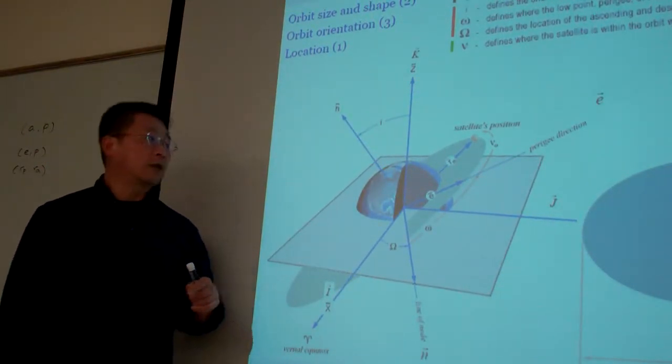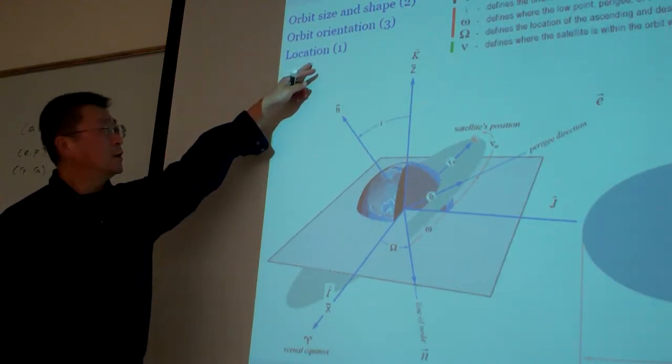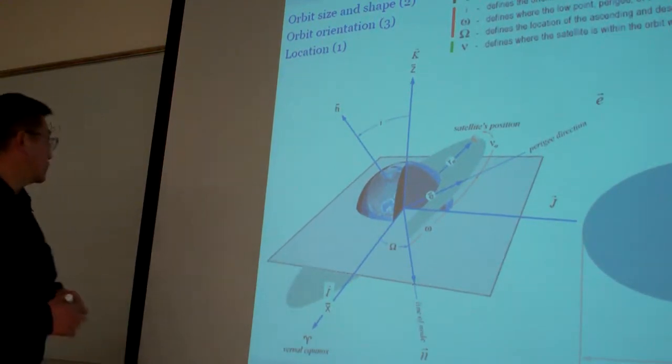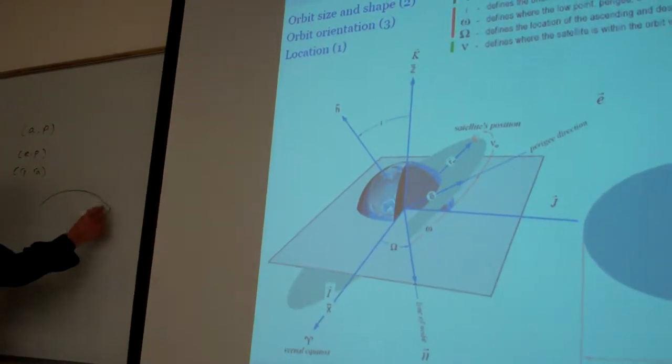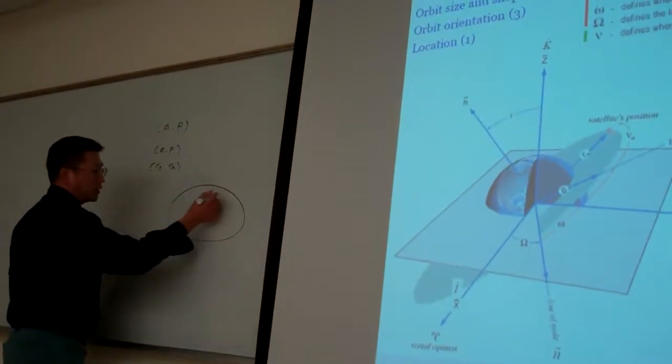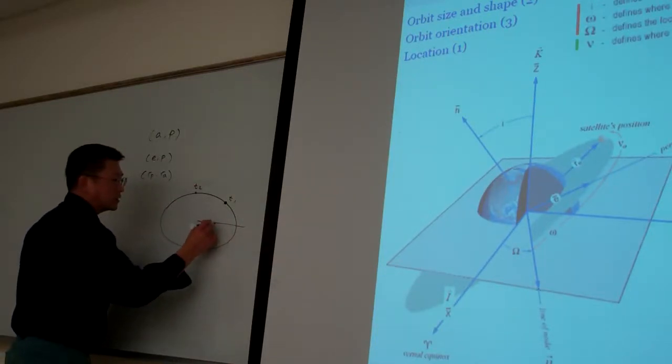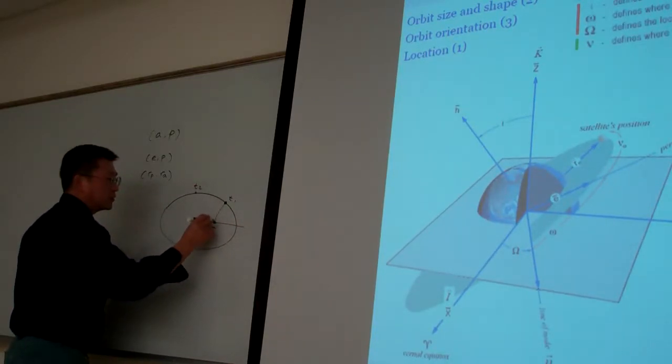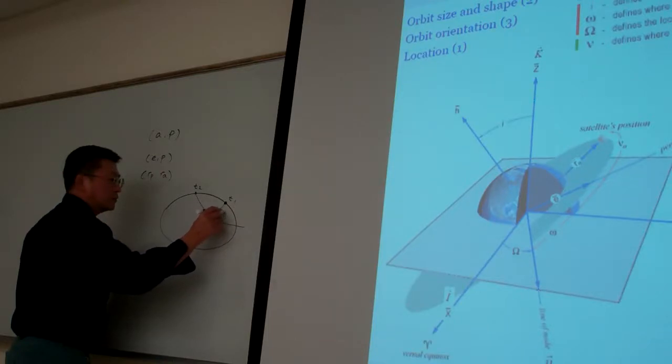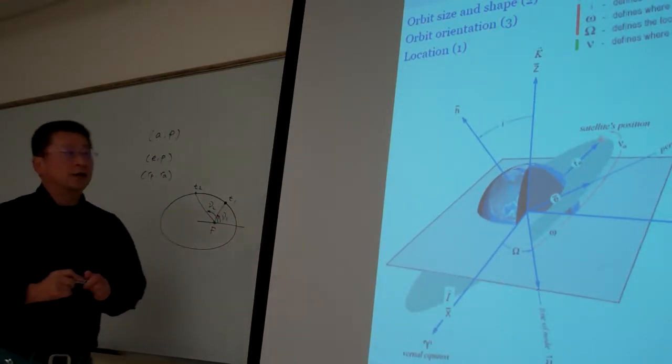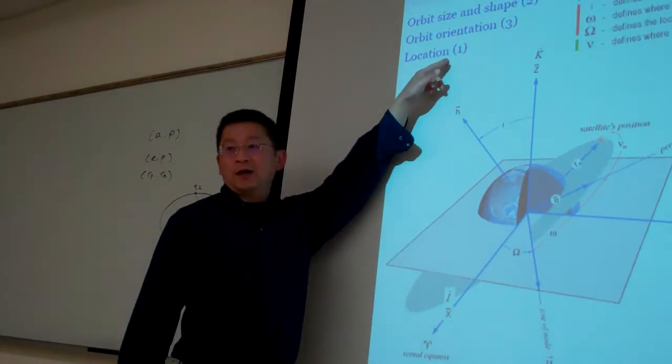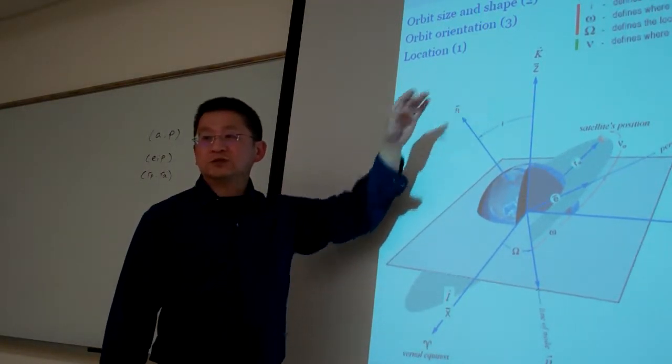And also, once we have everything set up, then we have to have one more parameter to know where is the location of the satellite in that orbit. For example, at time one here and moment time two here. So basically, this is the focus. We simply use the true anomaly, nu one and nu two. So true anomaly is the last parameter to describe.